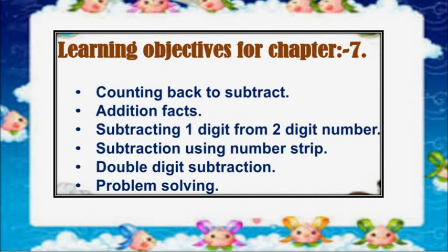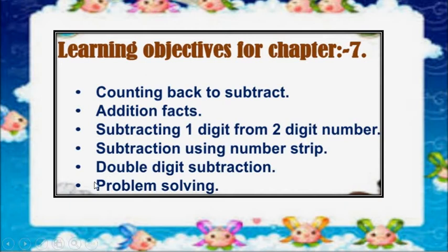Before we start, let me inform you about the Learning Objectives for chapter number 7. Here is the conclusion of what we are going to learn in the whole chapter. In chapter number 7, we are going to learn about: Counting Back to Subtract, Addition Facts, Subtracting one digit from a two-digit number, Subtracting one using number strip, Double digit subtraction, and Problem solving.